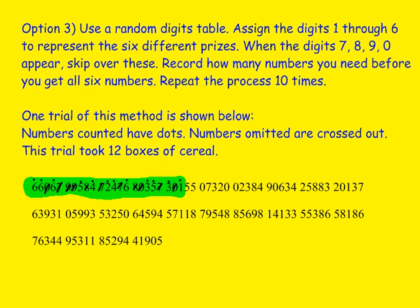Here is an example of how we use the random digits table to carry out one trial. The numbers with dots above them are numbers one through six, meaning we purchased a box of cereal with that numbered prize. The ones that are crossed out — zeros, sevens, eights, and nines — we ignore. We keep looking at numbers until we have seen all the digits one through six. In this particular trial, highlighted in green, it took twelve boxes of cereal. You can see it would be unrealistic to purchase twelve boxes just for one trial, and then have to repeat this two or three hundred times — that would be an awful lot of cereal.